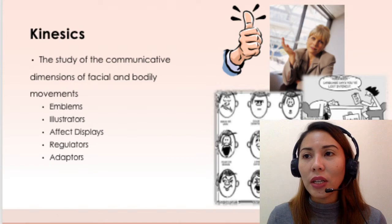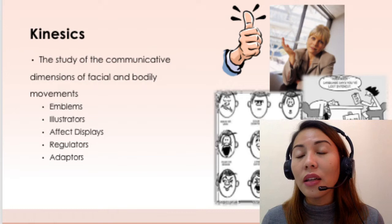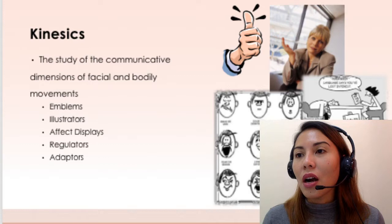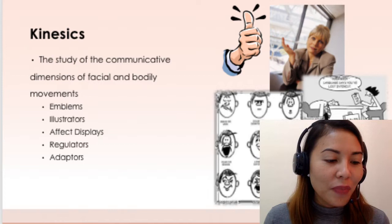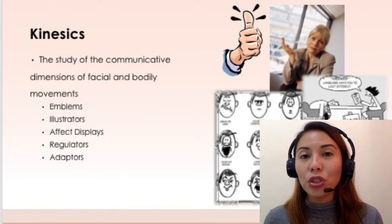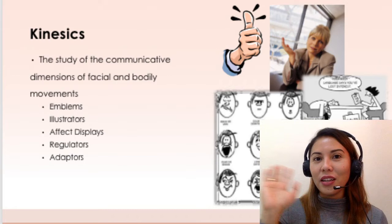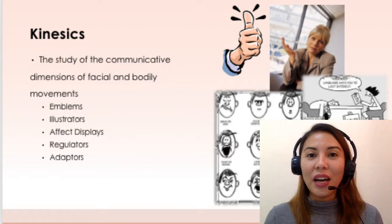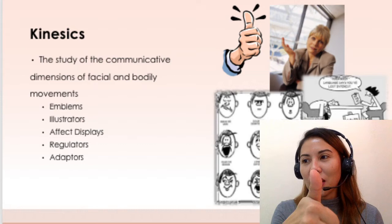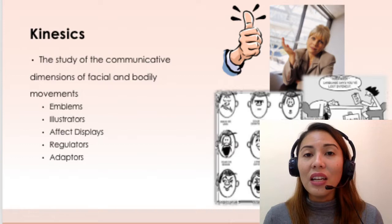Kinesics refers to the study of communicative dimensions of facial and bodily movements, and it has five subcategories. First, we have emblems — gestures that are direct replacements for words. They include a thumbs up or thumbs down sign, or a wave of your hand that says hi, hello, or goodbye. You don't have to say anything — the thumbs up sign is enough to get your message across.